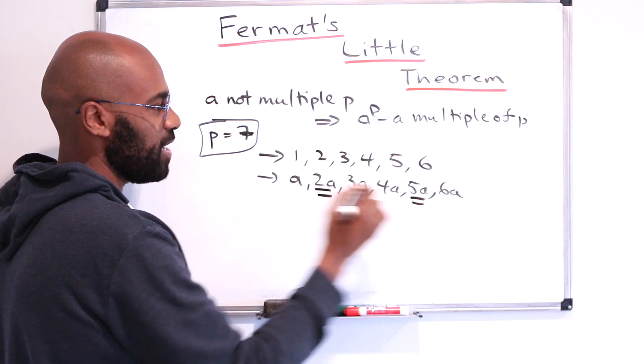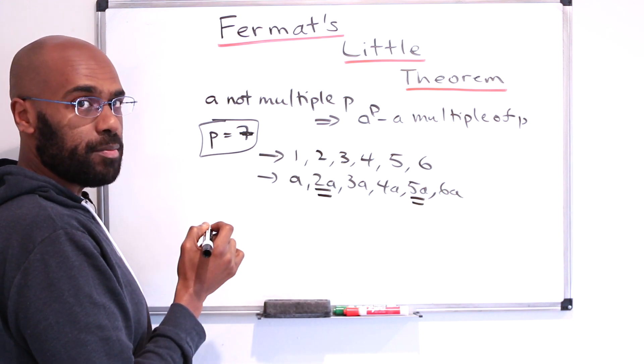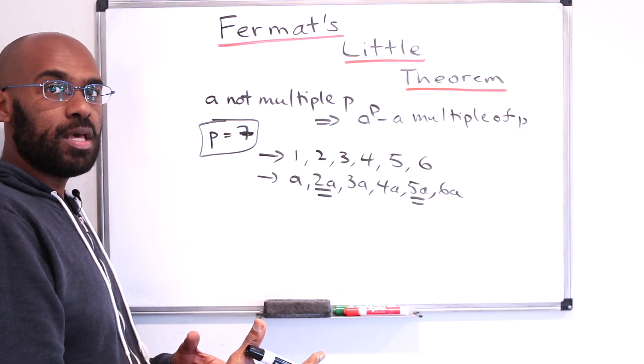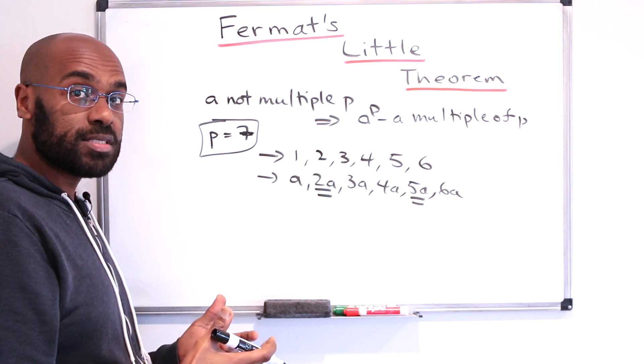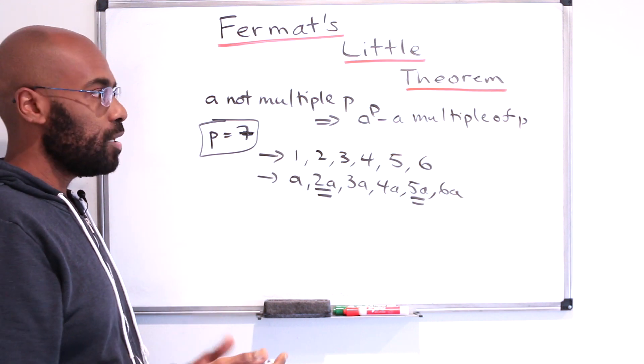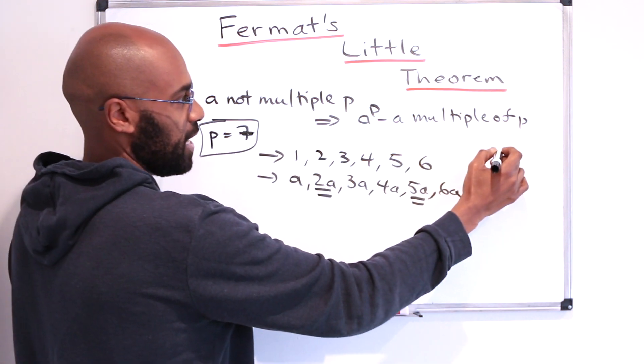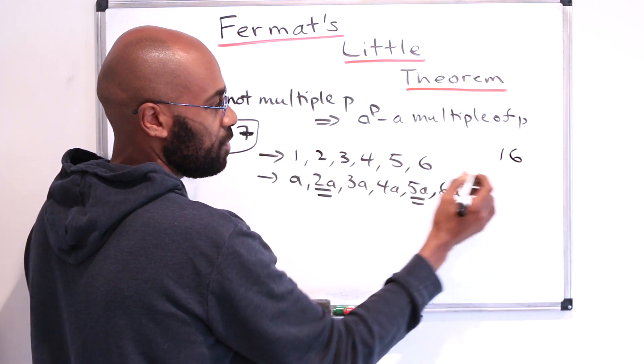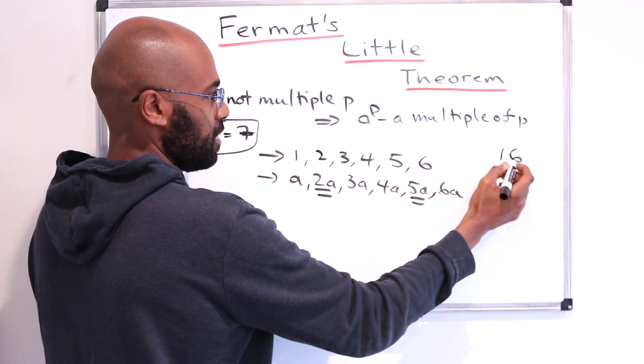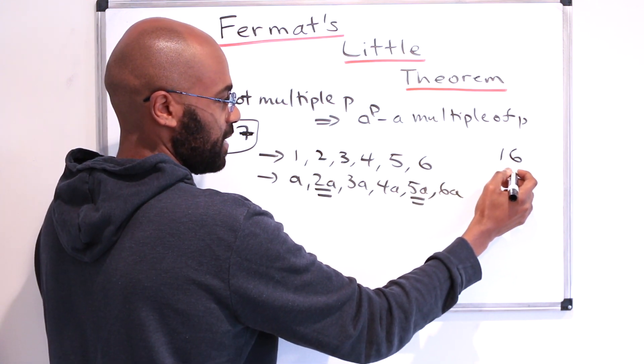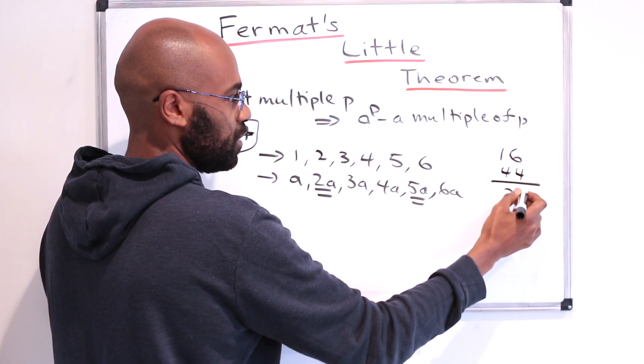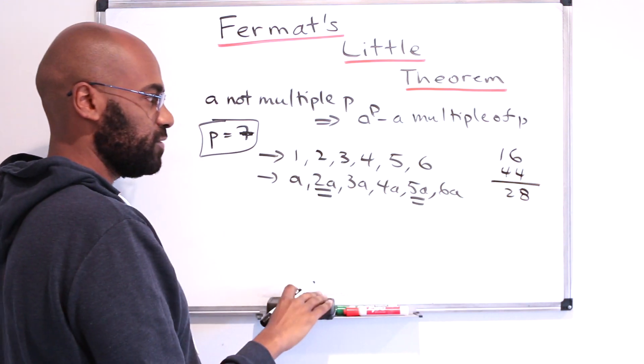Like, let's say 2a and 5a had the same remainder when divided by 7. If these two have the same remainder when divided by 7, then their difference would have to be a multiple of 7. For example, if you have two numbers like 16, which has a remainder of 2 when divided by 7, and another number that has a remainder of 2 when divided by 7, like 44, the difference between these two is 28, and that is a multiple of 7.